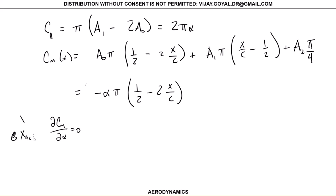Setting this equal to zero gives -π(1/2 - 2x/c) = 0, so x_ac = c/4. We already knew that from class for thin airfoil.